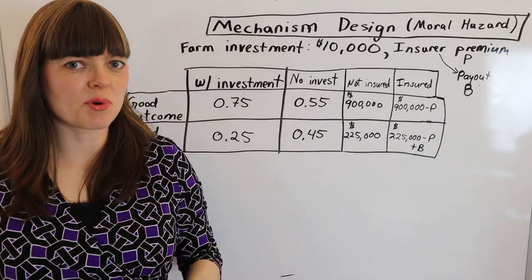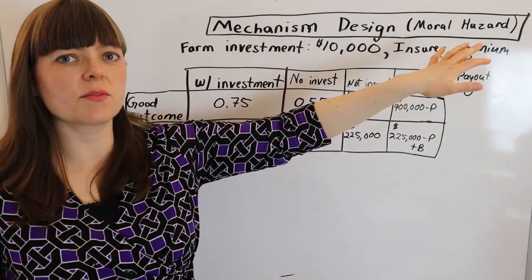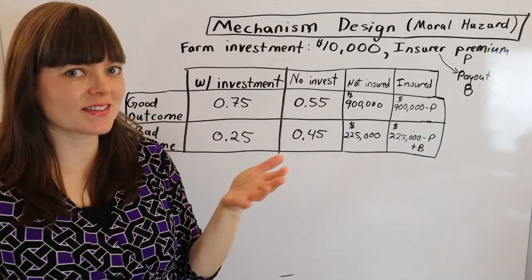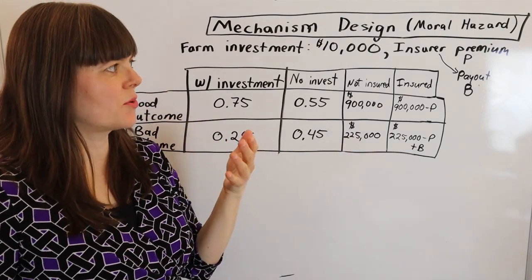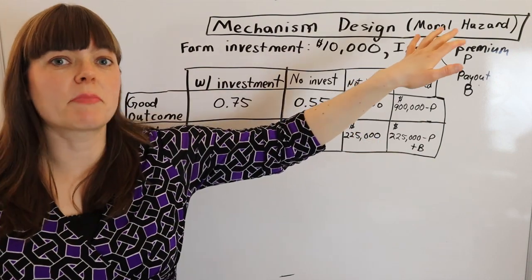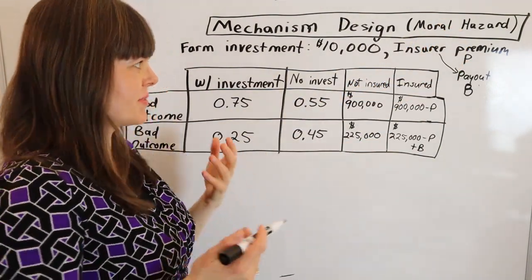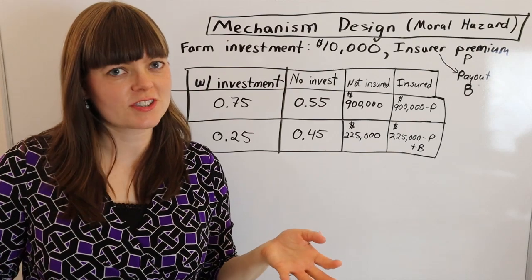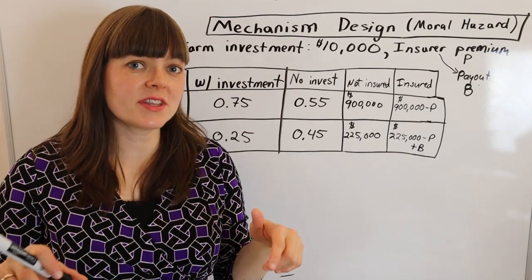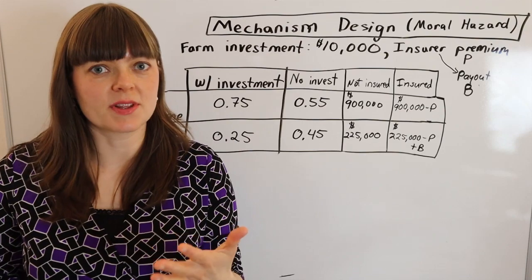I'm going over a mechanism design problem, and this is one that's associated with moral hazard, where the mechanism designer is trying to get certain behaviors out of the people who enter into the contract. In particular, we're talking about an insurance company and a farmer, and I'll put the details to this problem below in case you want to read them.